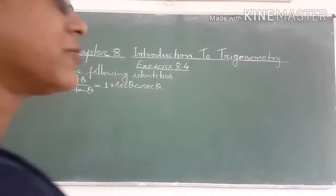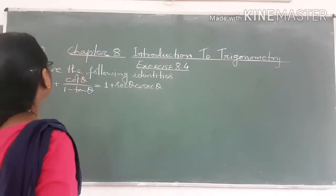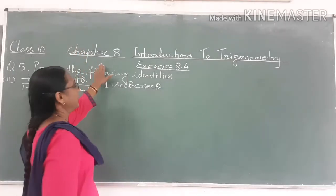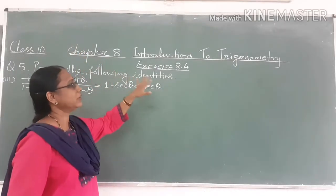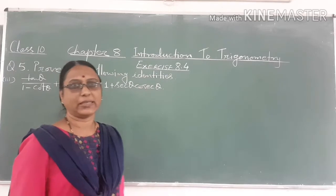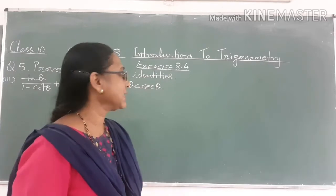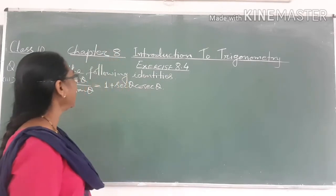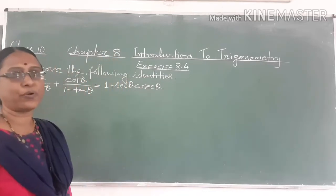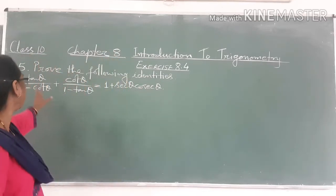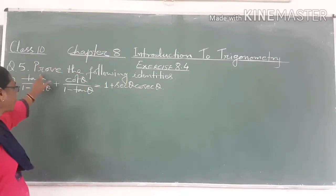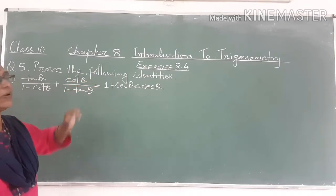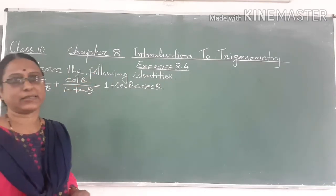Hello students. Chapter 8, Introduction to Trigonometry, exercise 8.4, question number 5: prove the following identities.